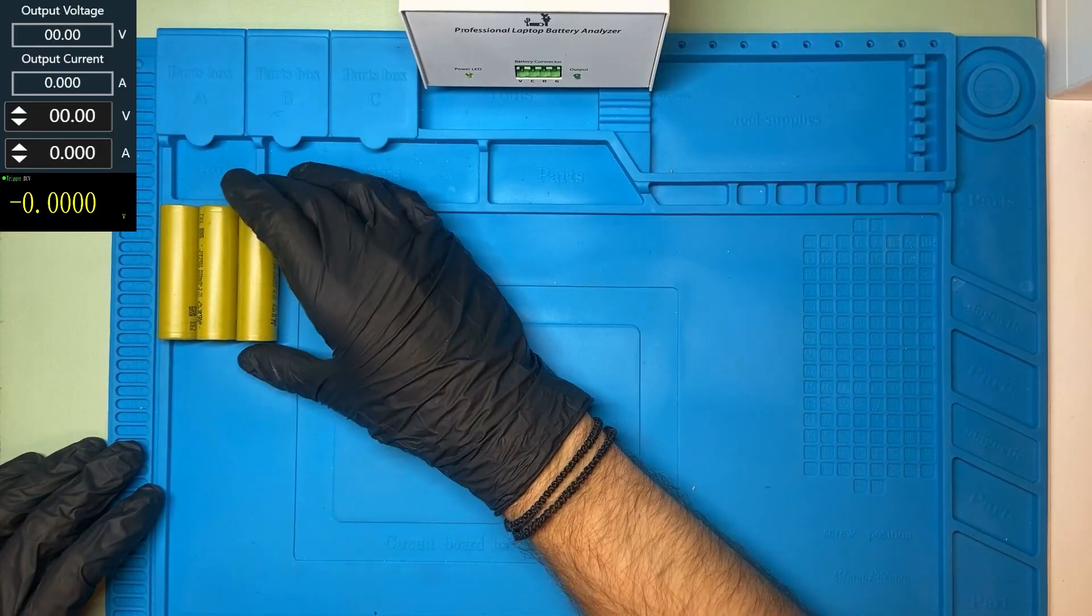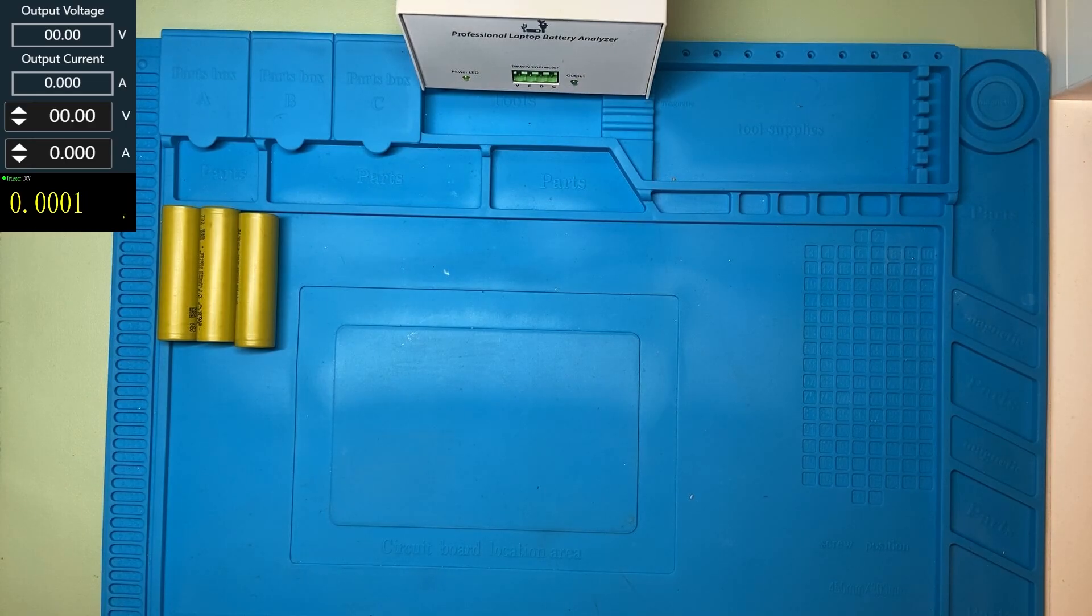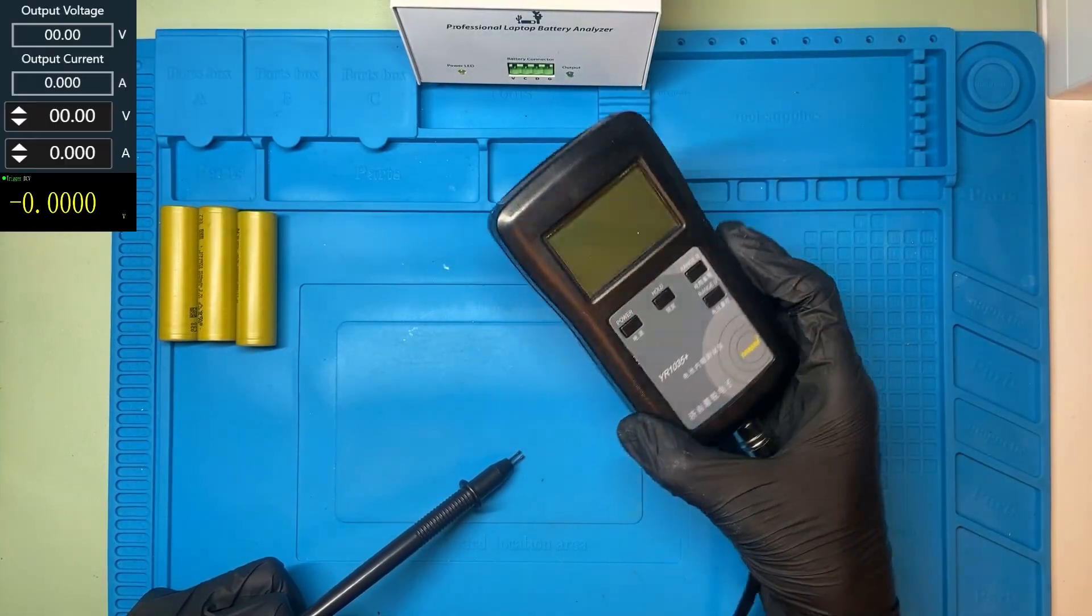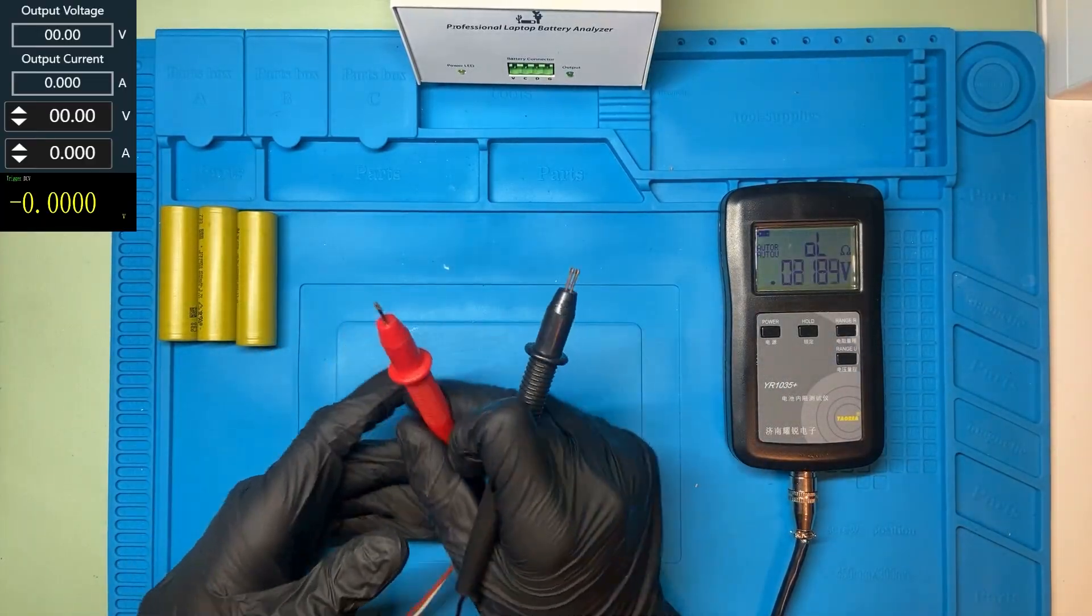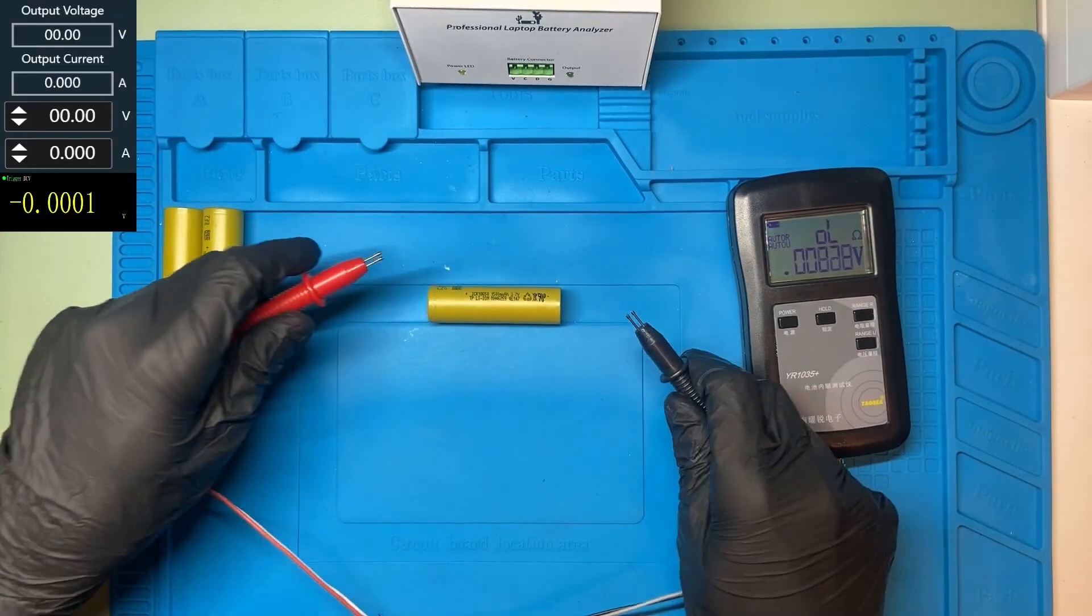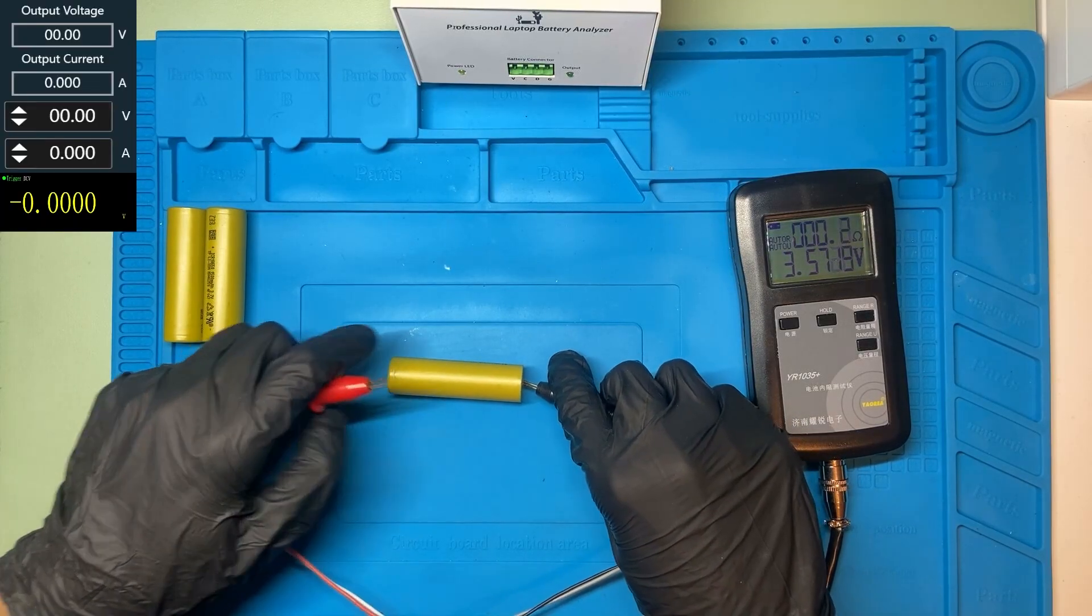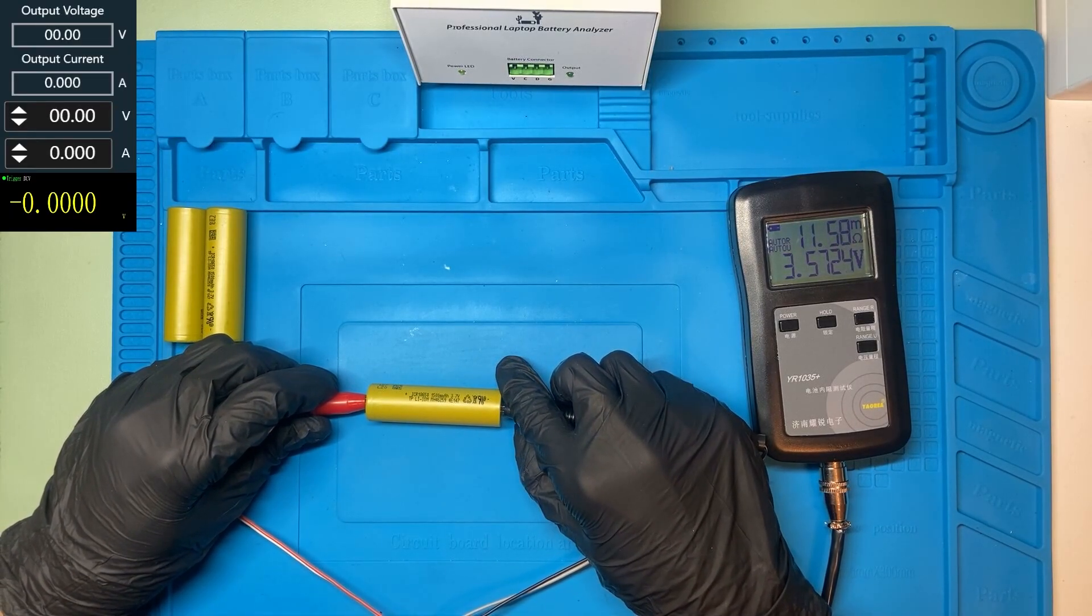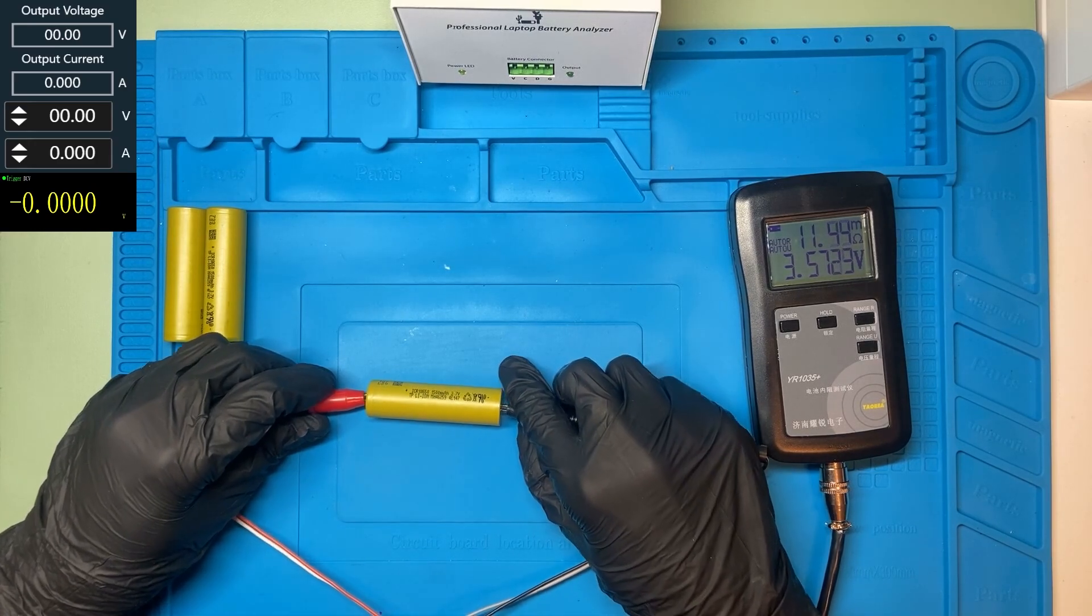We are going to start by checking the internal resistance of these cells. We are going to use this device that can check the internal resistance, go and power it on. I hope you see very clearly and we are going to check now the cells. The internal resistance of these cells is 11.6 milliohms. It's a very good internal resistance.